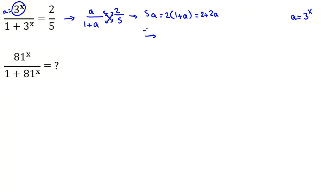If we subtract both sides by 2a, or take 2a to left hand side, 5a minus 2a, 3a equals 2. And if we divide both sides by 3, a equals 2 over 3.